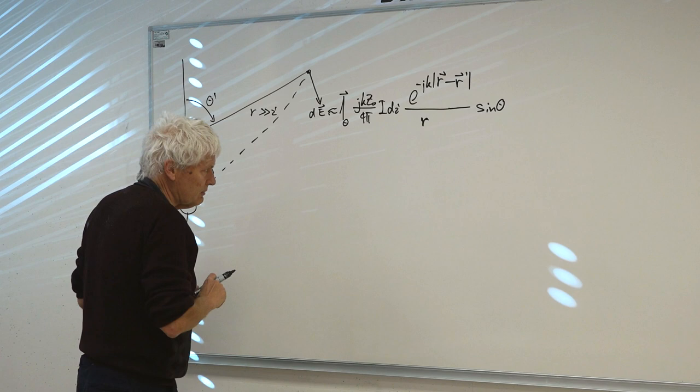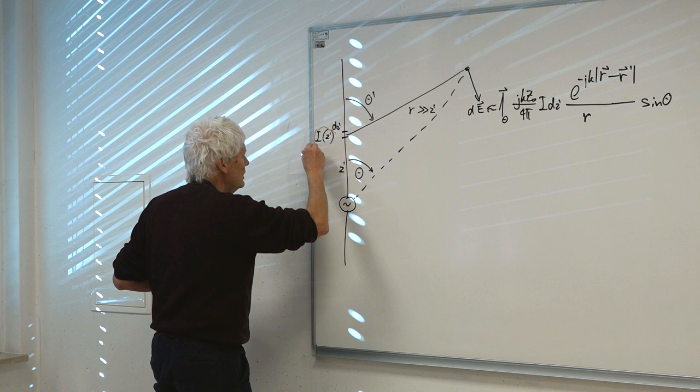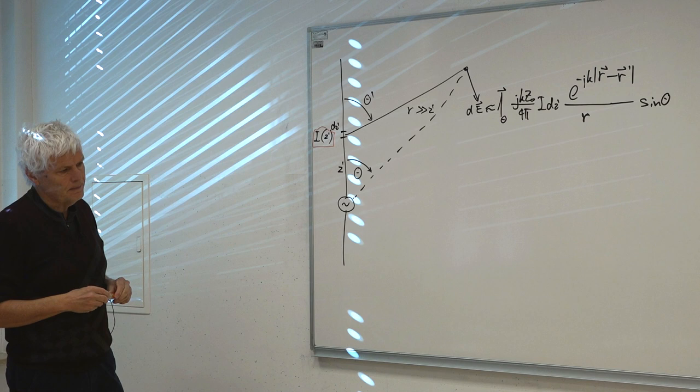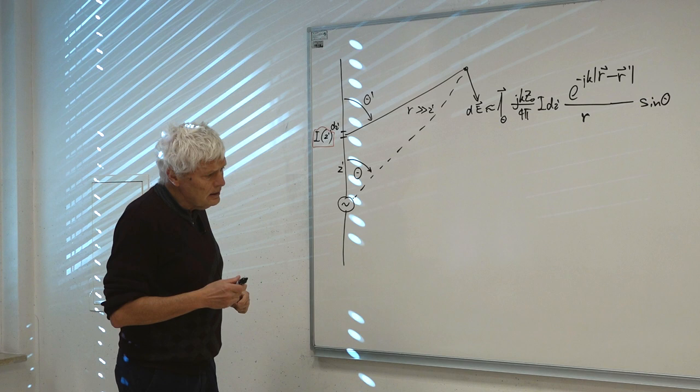This is what we did last time — guessing the current distribution from the standing wave. A standing wave is caused by the near field of the current. We already looked at some more complicated examples.